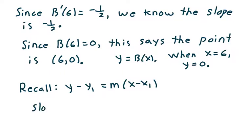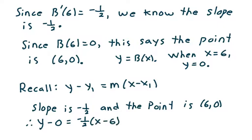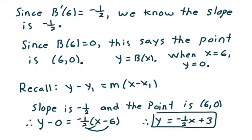We know the slope is negative one half and the point is (6, 0). So therefore, y minus 0 equals negative one half times x minus 6. Now I want to distribute the negative one half inside. Remember, y minus 0 is y. So y equals negative one half x, and since half of 6 is 3, we get y equals negative one half x plus 3. That's the answer to problem 27.